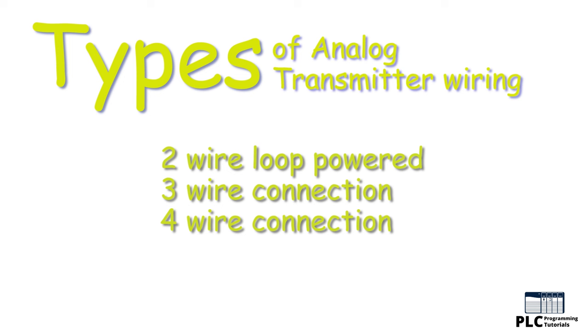There are several types of wiring configurations for the 4 to 20 milliamp transmitters. The most common wiring configurations are 2-wire, 3-wire, and 4-wire configurations.